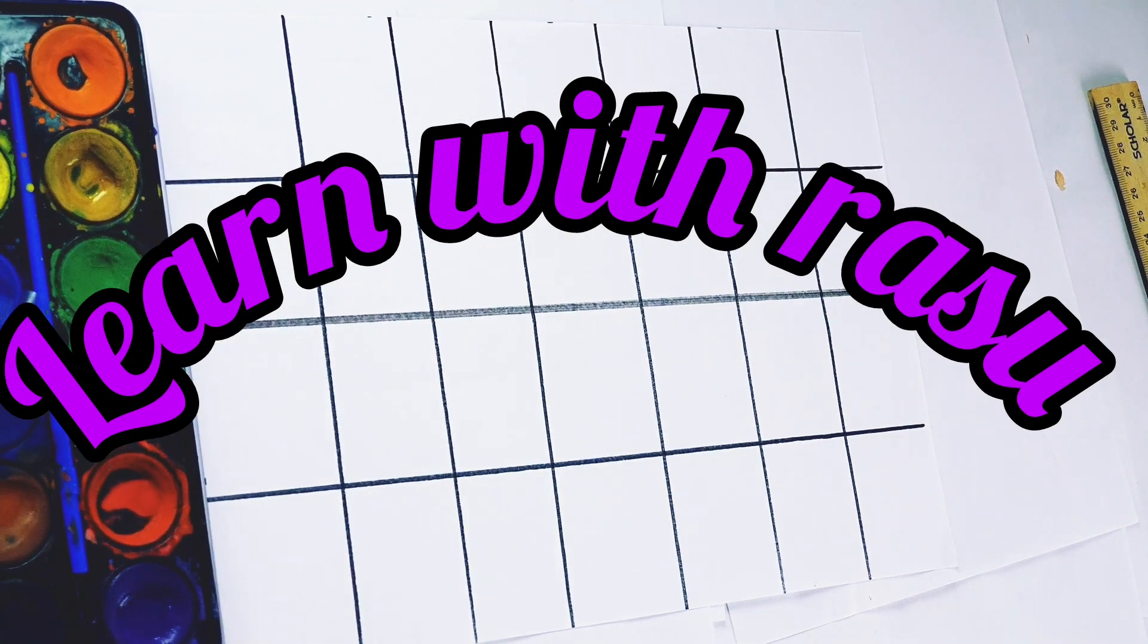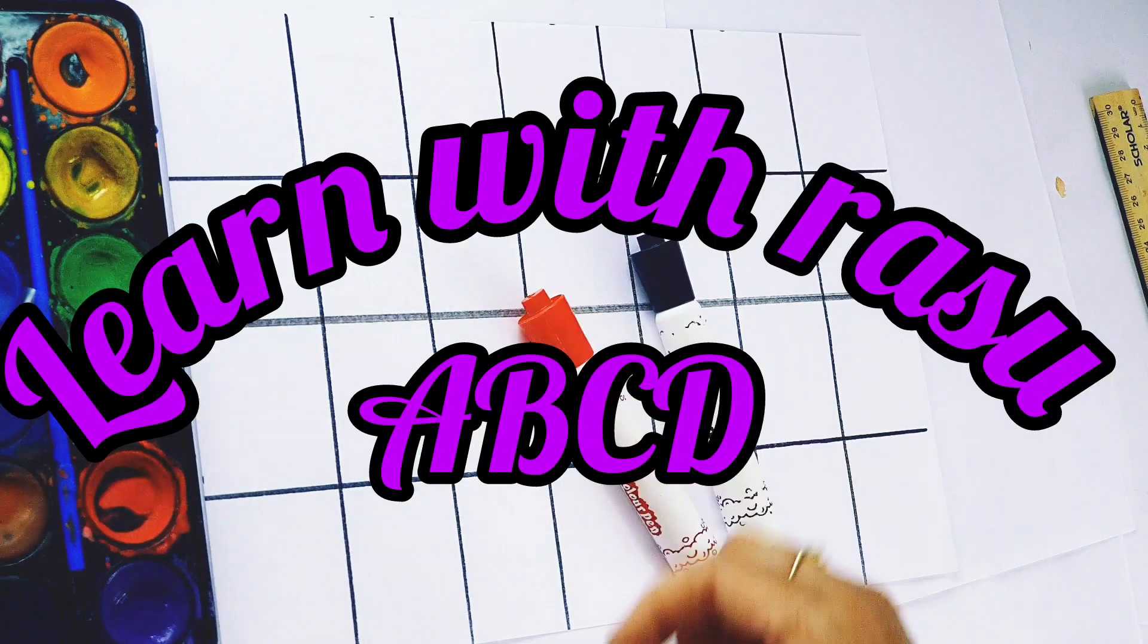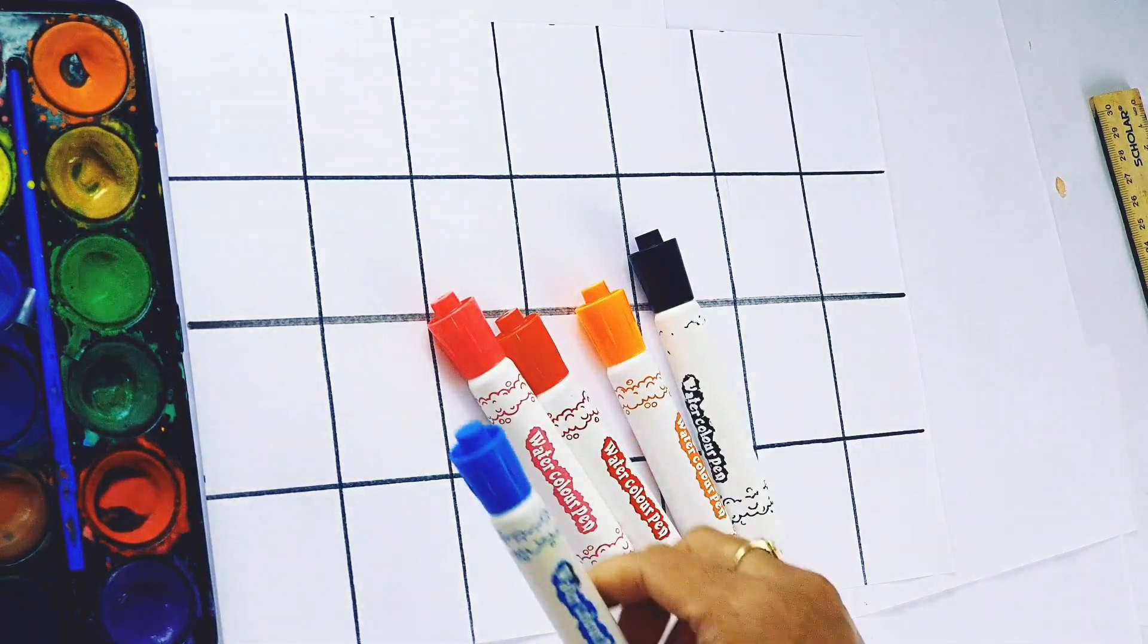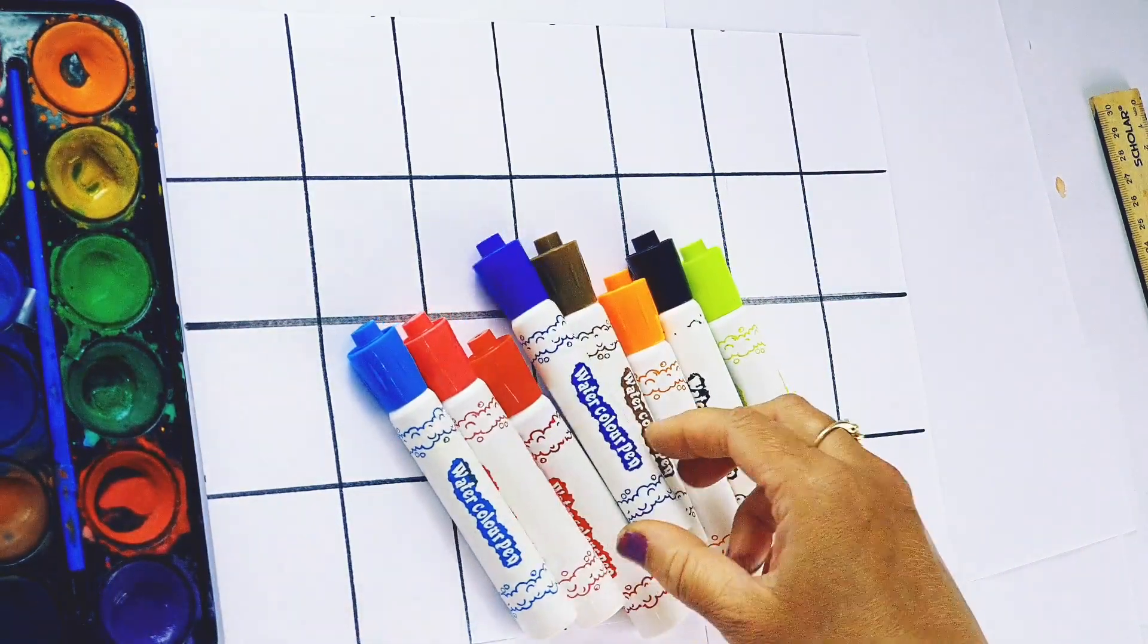Hello kids, welcome to my channel. So today we are going to learn ABCD, black color, red color, pink color, orange color, light blue color, neon color, brown color.